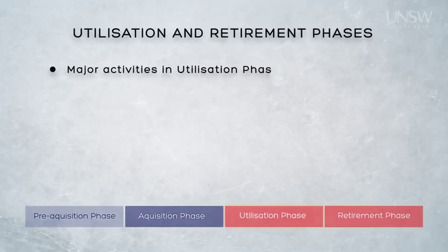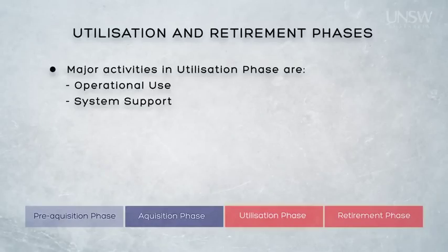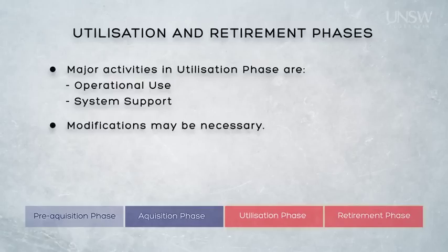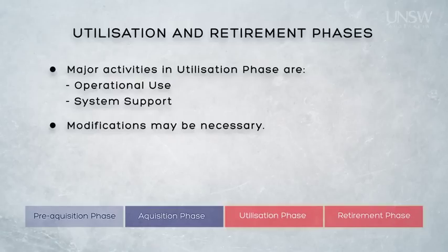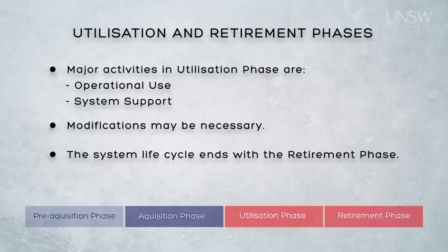On acceptance from the supplier, the customer moves the system into utilisation by introducing it to service. The major activities during this phase are operational use — the purpose for which the system was designed — and system support. Systems engineering activities may continue during the utilisation phase, mostly to support modification activity that may be required, whether to rectify performance shortfalls, meet changing operational environments, or address ongoing support issues. The system stays in service, hopefully for a much longer period than it took to acquire, but must end at some time, with the system lifecycle concluding with retirement, which may overlap with the introduction of a replacement system.